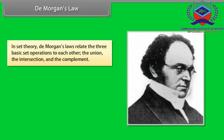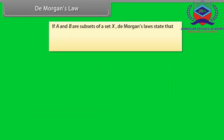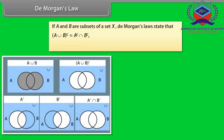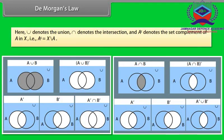De Morgan's Law. In set theory, De Morgan's Laws relate the three basic set operations to each other: the union, the intersection, and the complement. De Morgan's Laws are named after the Indian-born British mathematician and logician Augustus De Morgan. If A and B are subsets of a set X, De Morgan's Laws state that: complement of (A union B) is equal to complement of A intersection complement of B; and complement of (A intersection B) is equal to complement of A union complement of B.